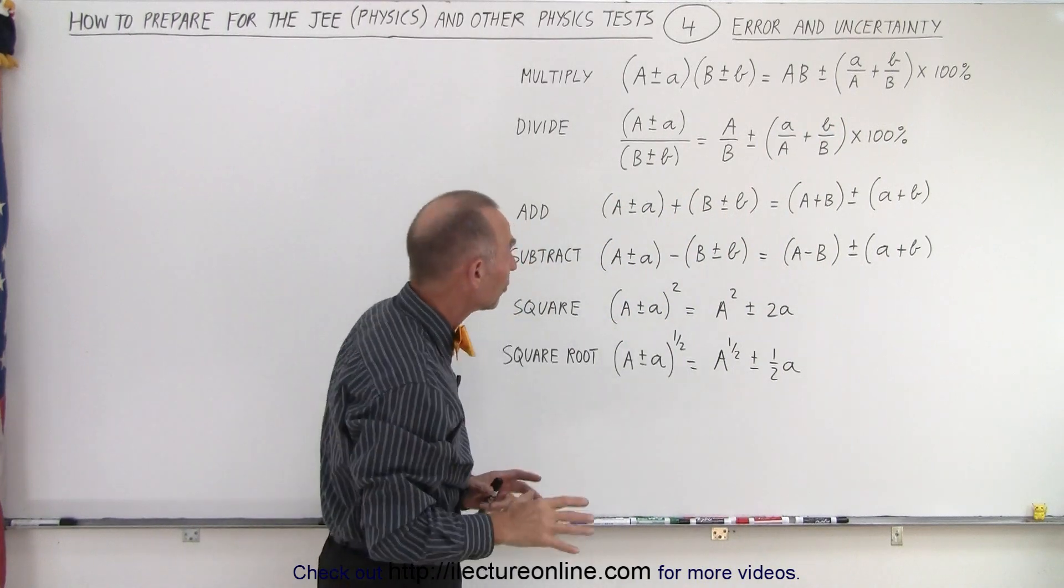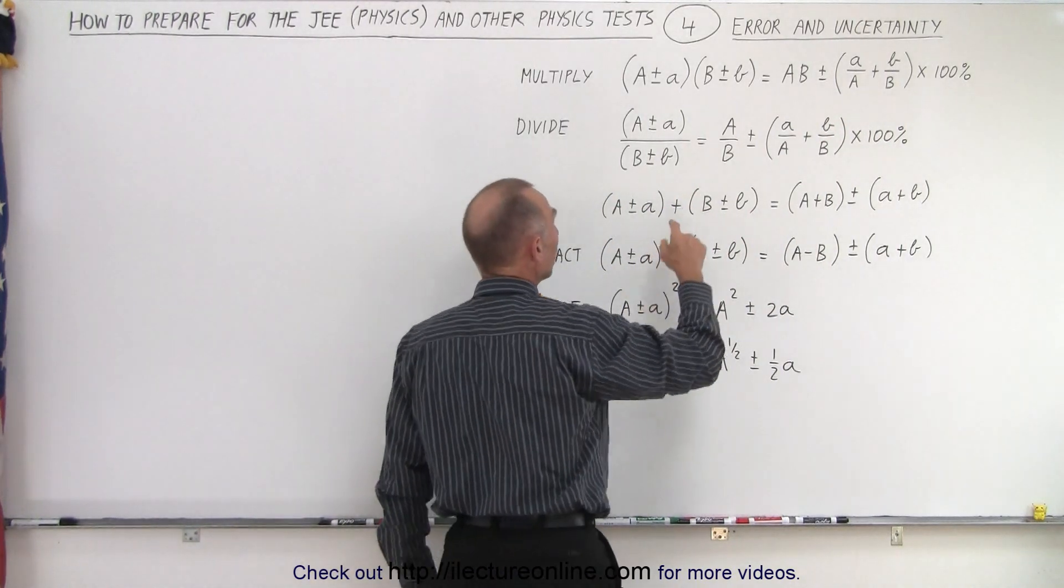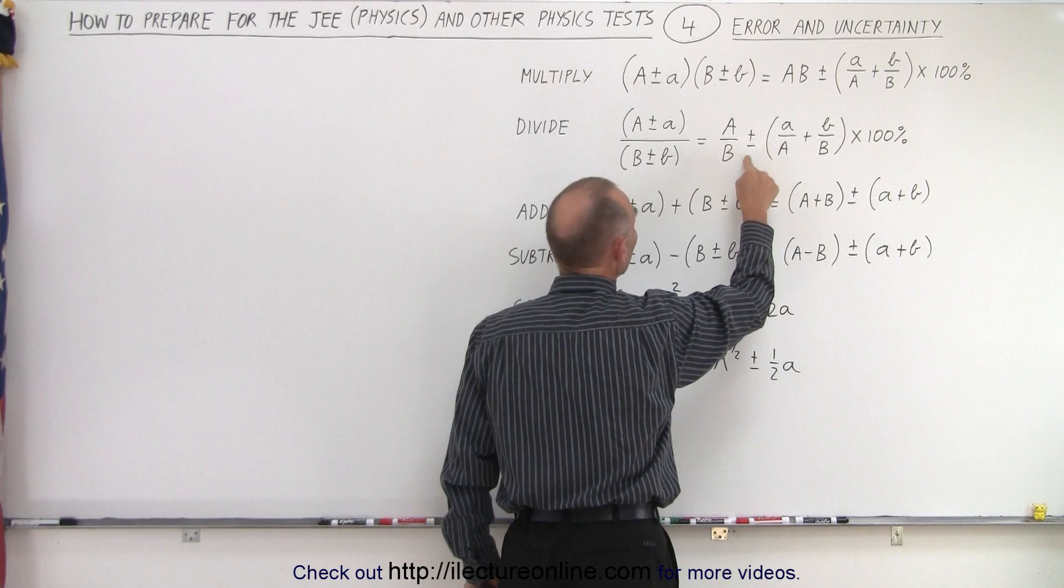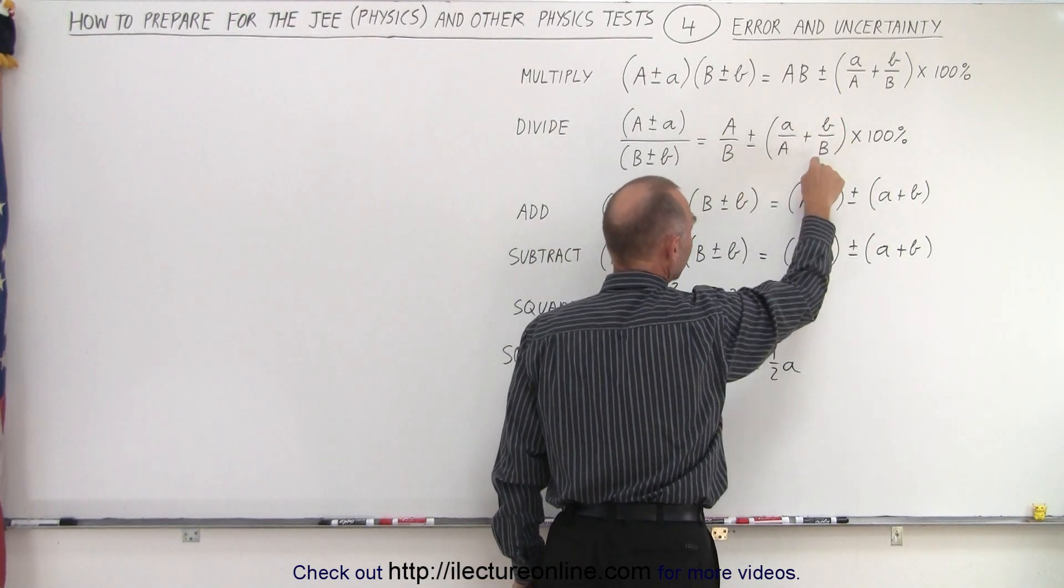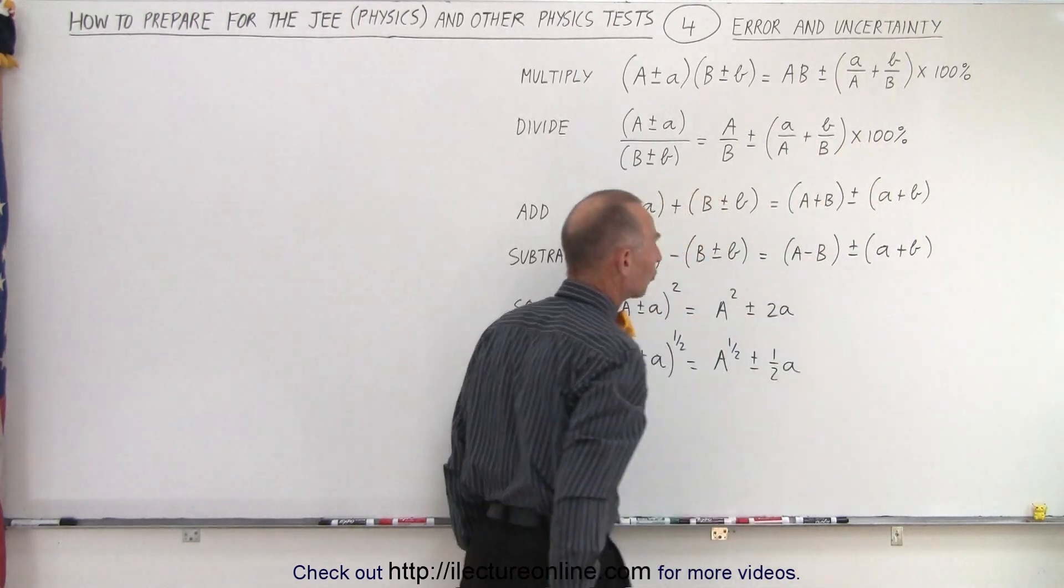What happens when we divide two numbers? Well, the same thing, we're going to divide A by B, but again, just like when we multiply, we're going to add the percent uncertainties. These are the fractional uncertainties and we convert those to a percent.